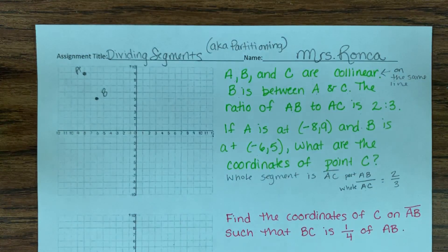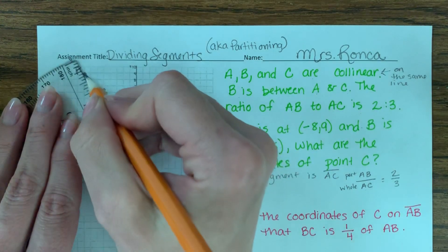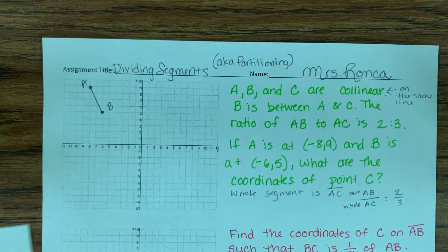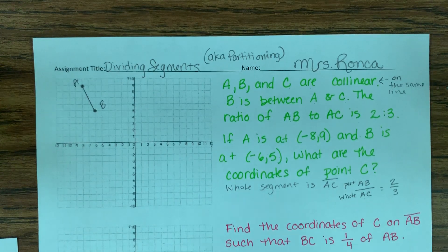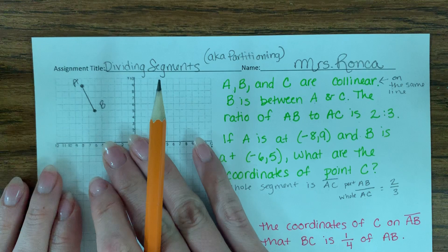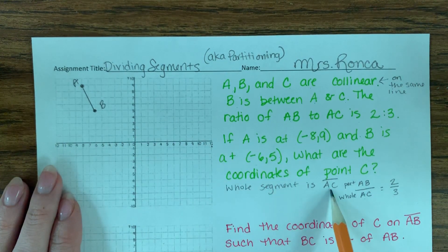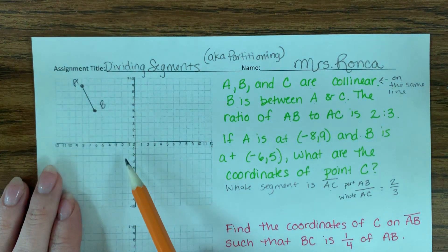I'm going to go ahead and connect it with a ruler or a protractor. All right. Now, in this example, I know that C is going to need to be down here somewhere because they're telling me that the whole segment is called AC.